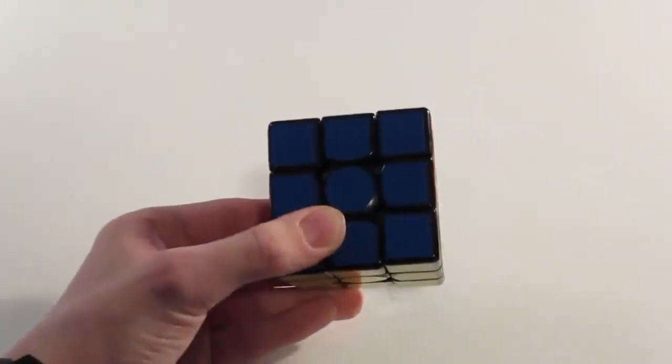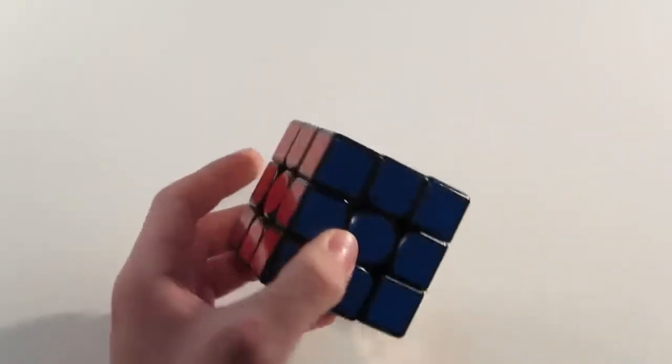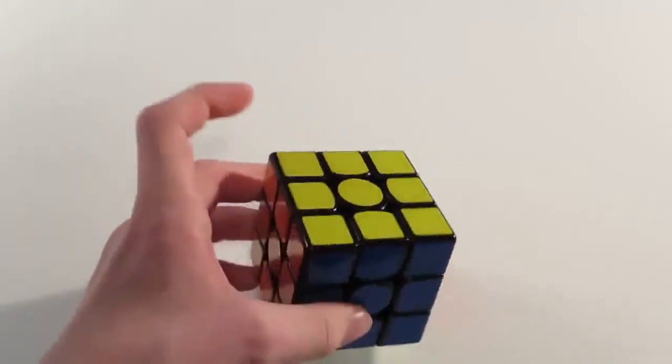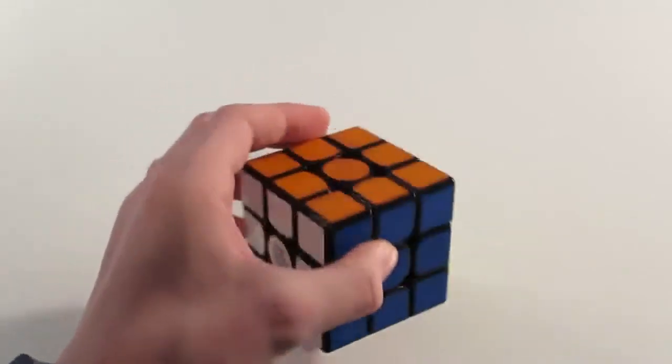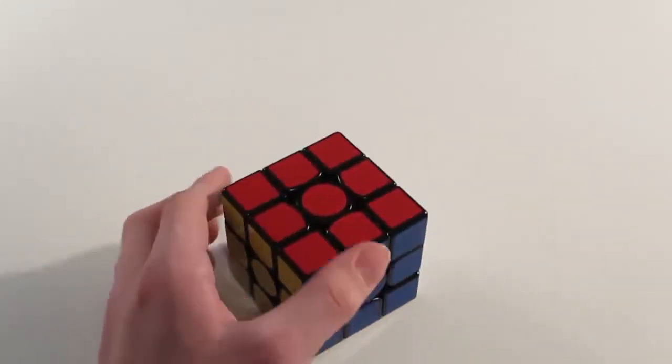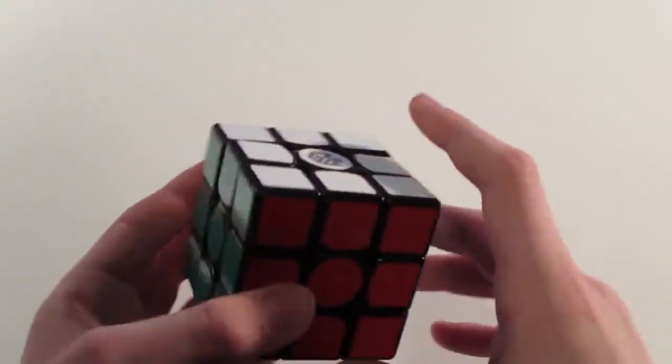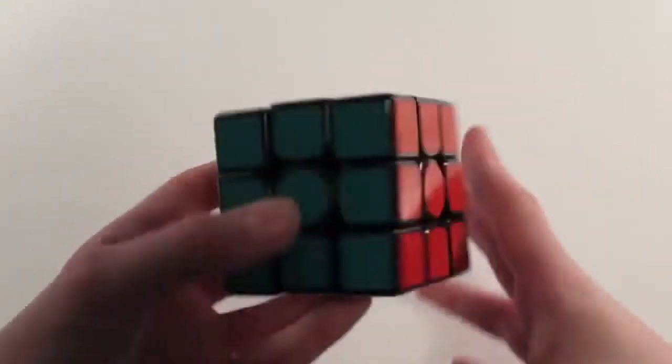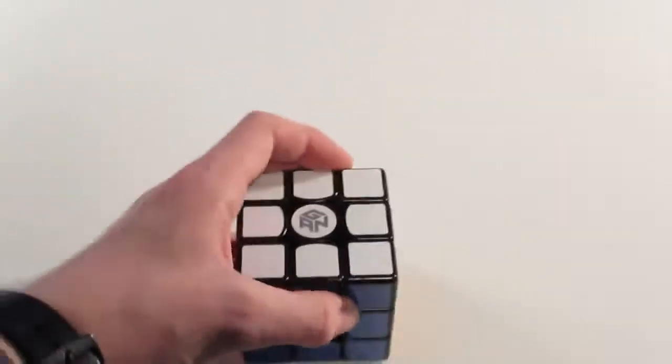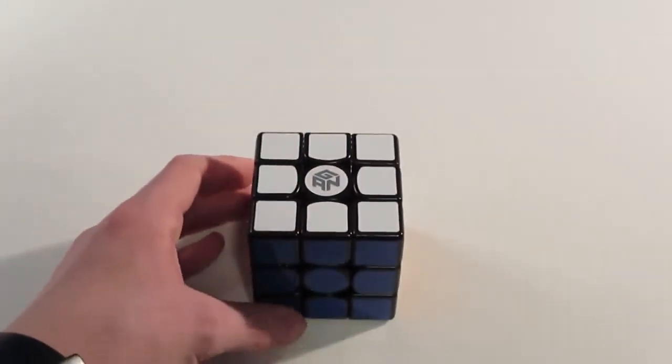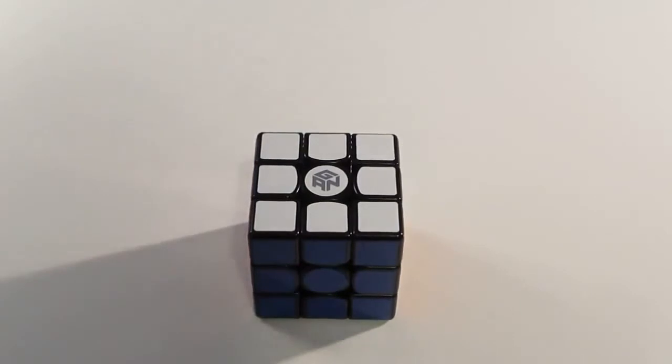So first off, let's start with the sticker shades. They're the standard Gans sticker shades, which are similar to the Dayan, and they're not very bright. Like, they're dull, and I don't know, I'm not a huge fan of them, but I'm spoiled by Moyu shades. They're not like a hindrance to solving, but they could be brighter, I guess.